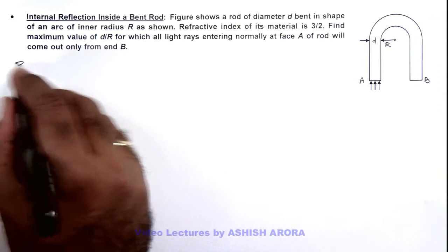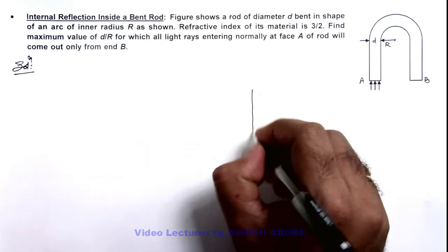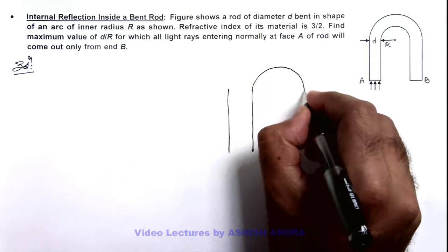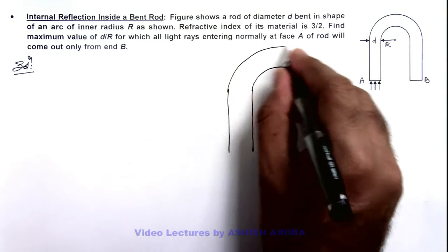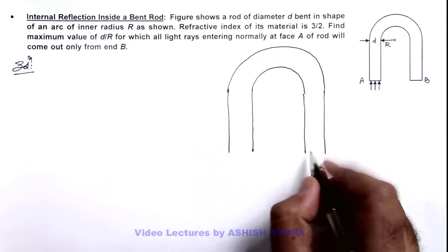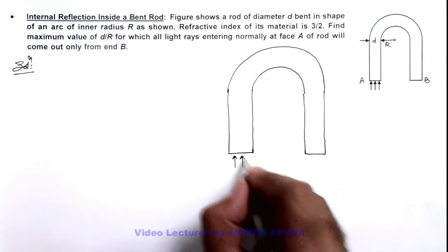So in this situation here we can see, I can redraw the picture of this bent rod. If the light rays are entering at end A and have to come out only from end B, that means at every interior point wherever the light ray is incident, it must be internally reflected.